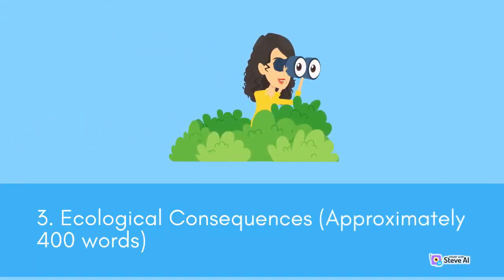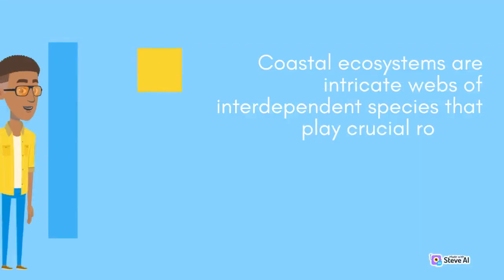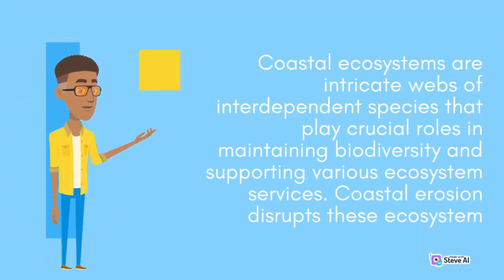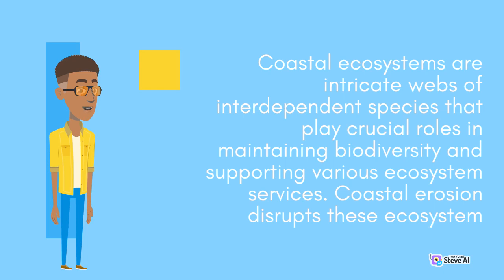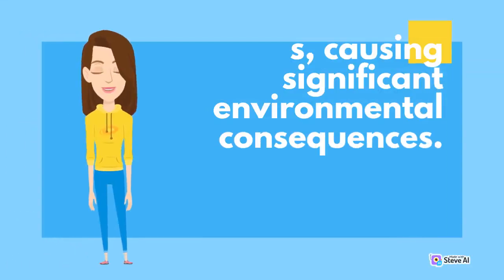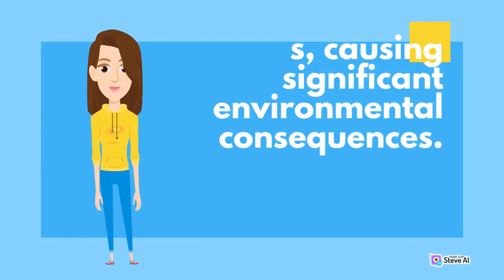3. Ecological Consequences. Coastal ecosystems are intricate webs of interdependent species that play crucial roles in maintaining biodiversity and supporting various ecosystem services. Coastal erosion disrupts these ecosystems, causing significant environmental consequences.